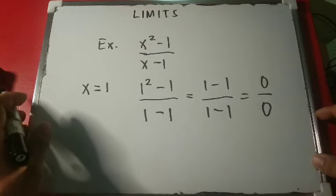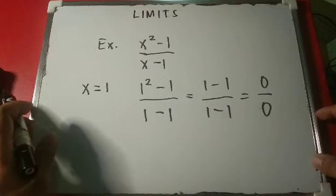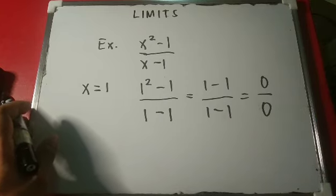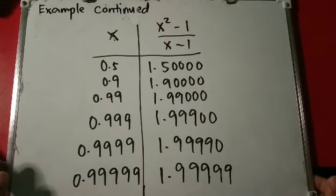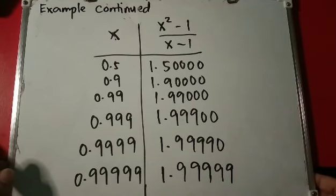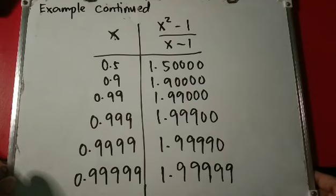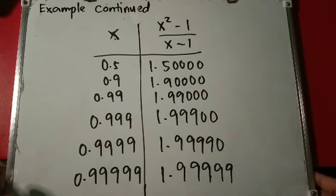Now 0 over 0 is a difficulty — we don't really know the value of 0 over 0 because it is indeterminate. So we need another way of answering this. Instead of trying to work it out for x equals 1, let's try approaching it closer and closer. Looking at the table: for x equals 0.5 the function gives 1.5; for x equals 0.9 we have 1.9; for x equals 0.99 we have 1.99.